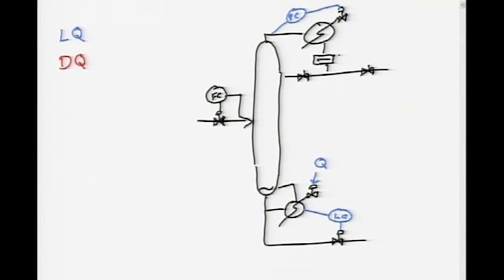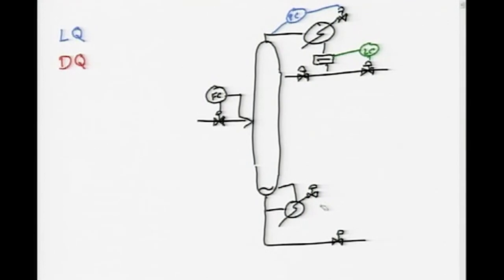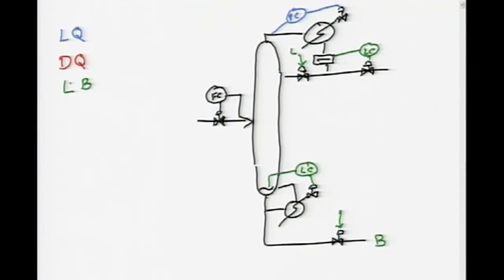We may also have a situation where level control on the top is the usual way. In the bottom, because the bottom stream is a trickle, level cannot be effectively controlled using that trickle. Therefore, the level in the bottoms has to be controlled using the reboiler duty. That leaves the bottom stream, and the operator has to set L and B in order to get the desired separation. That structure is called LB.